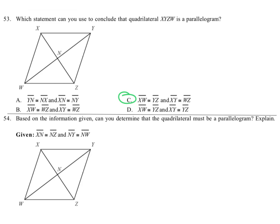And what does it say? XW is congruent to YZ and XY—let me get a different color in there—and XY is congruent to YZ. Now that's funny. That's just somebody reading something wrong or whatever. It's not that one.